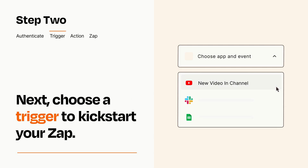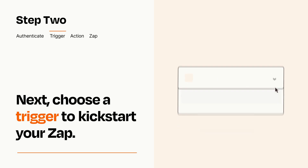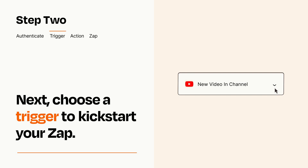Now let's set up your trigger, which is the event that starts your Zap. Pick the trigger event that you want from the list. When you set up this step, your Zap will pull in test data from your trigger app that you'll see later when setting up your action app.